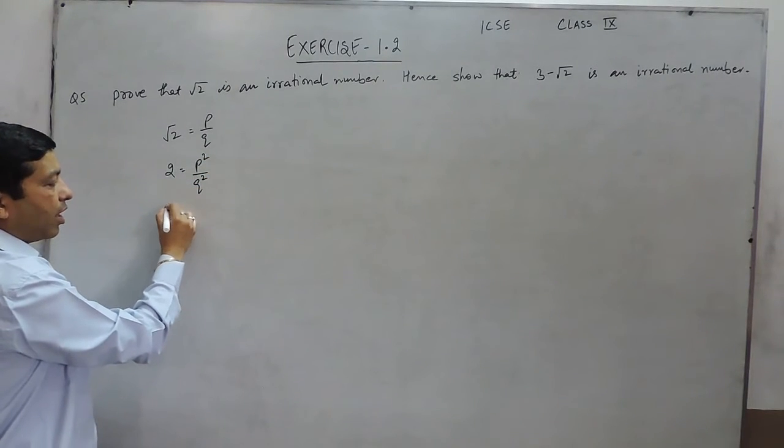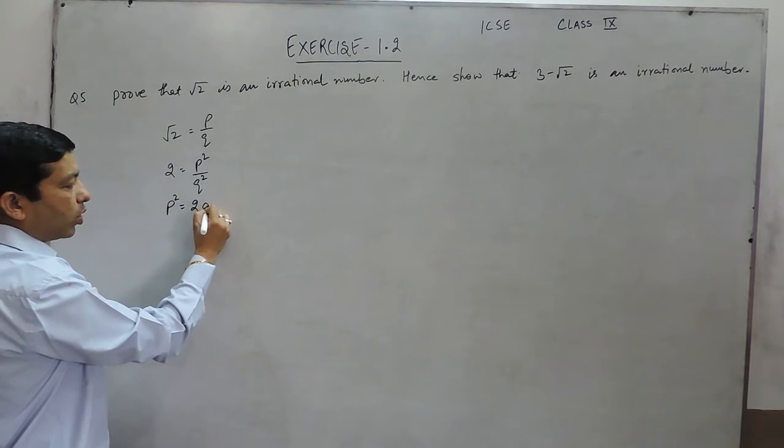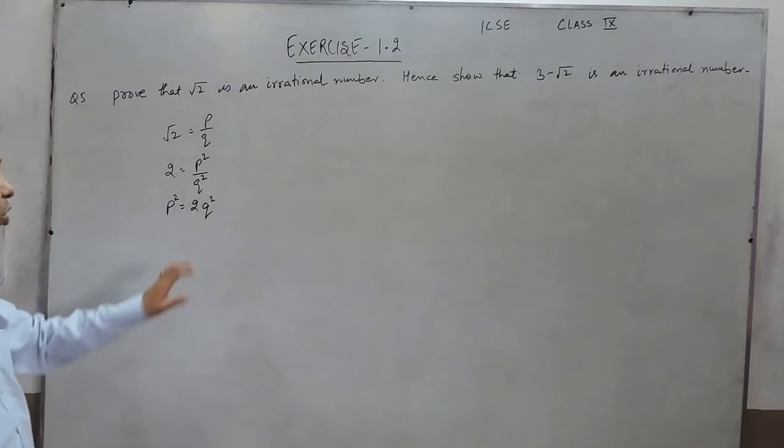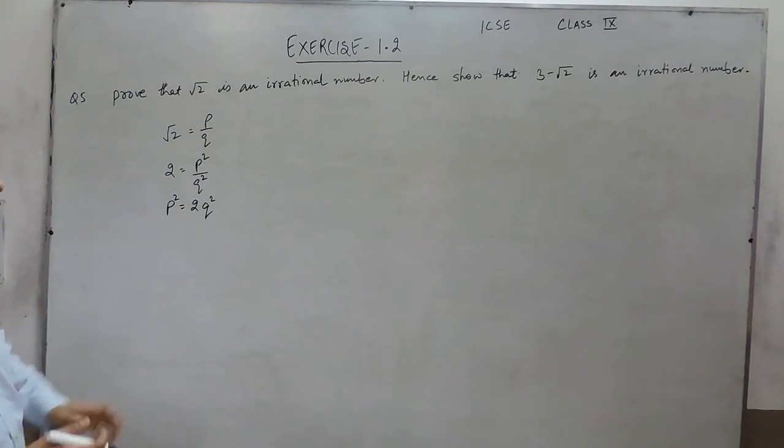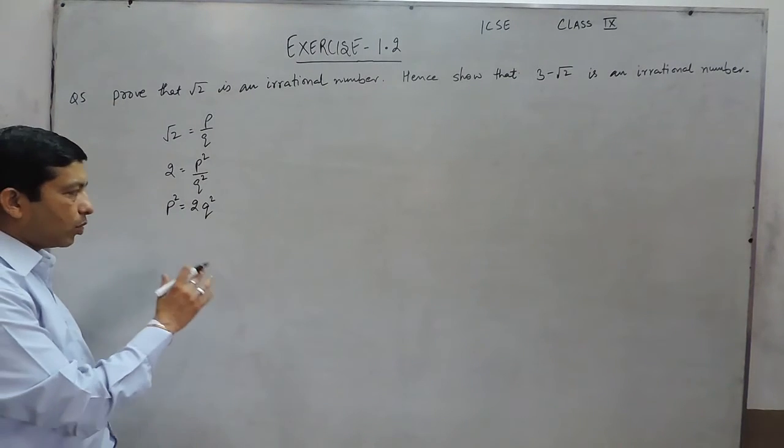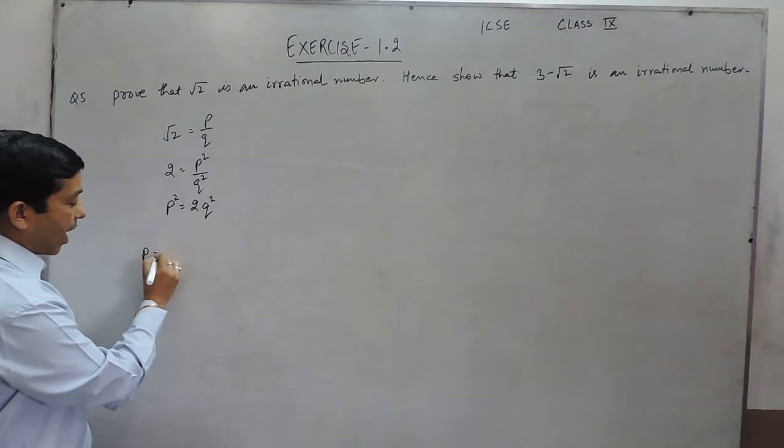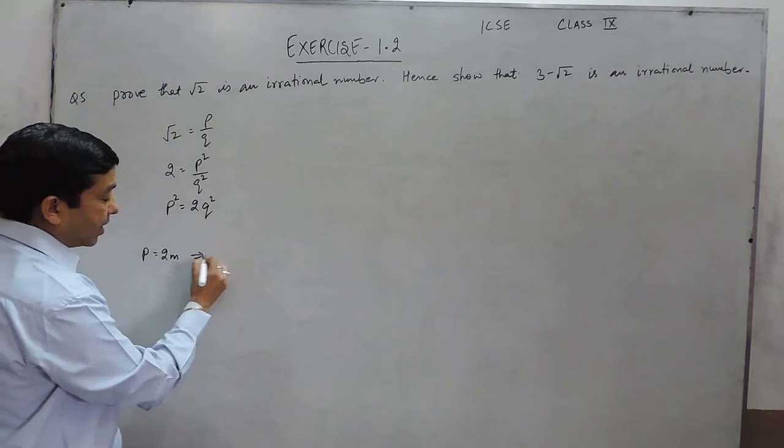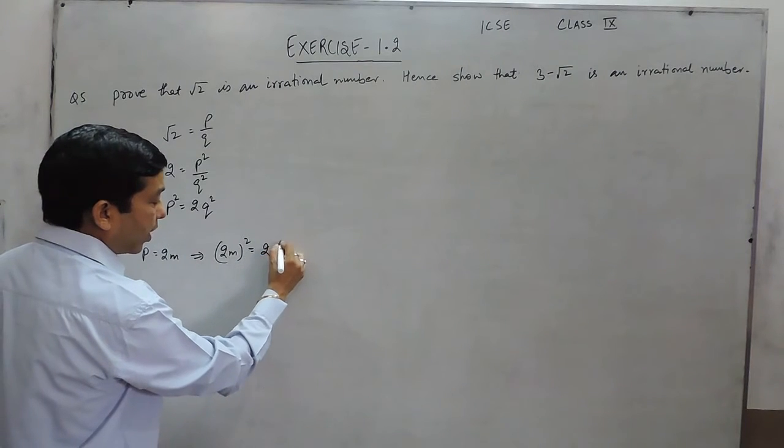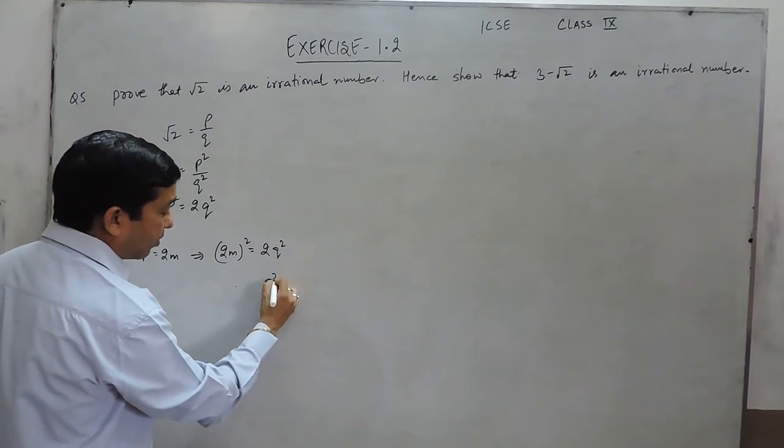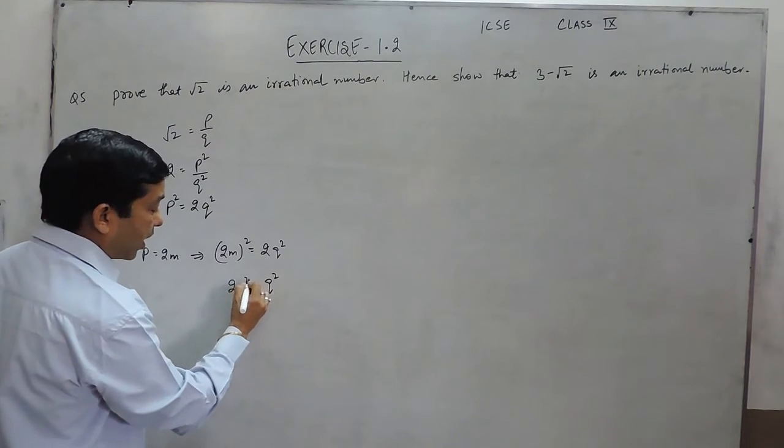That means 2q² is divisible by 2, and p² is also divisible by 2. It means p has a factor 2. If we put the value of p as 2m, then we can say (2m)² = 2q², where solving it comes out to be q² = 2m².